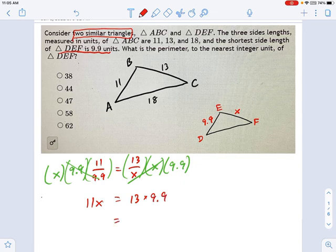13 times 9.9 is going to be 128.7. That's what 11X is, and therefore X equals, divide this thing by 11, and there you go, 11.7.